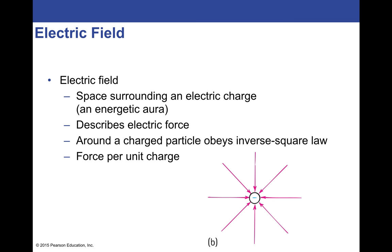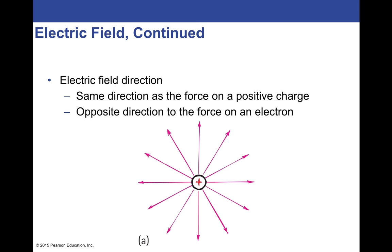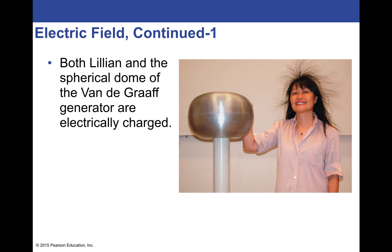Electric field lines move out radially from a positive charge — think of spokes on a wheel radiating from the hub — and move into a negative charge. You can see an electric field visually in the classic image of someone touching a Van de Graaff generator: her hair picks up the charge and repels itself, with each strand following the lines of electric force radiating out of her head.